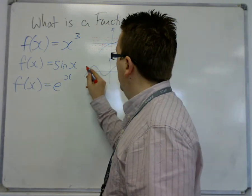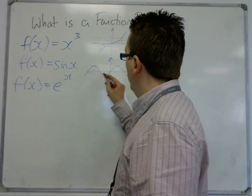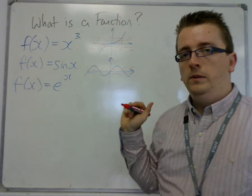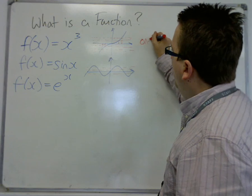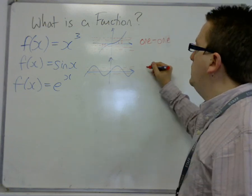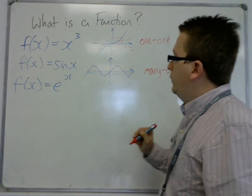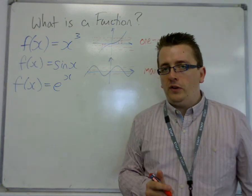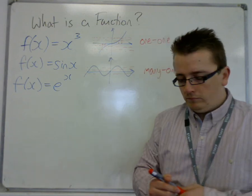But if I do it for this curve, I get many values of x. This is a curve that is known as one to one. And this curve would be known as many to one. So what would f(x) equals e to the x be? Would it be one to one or many to one?